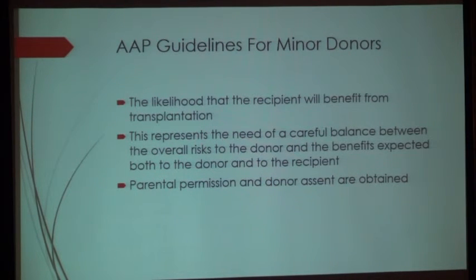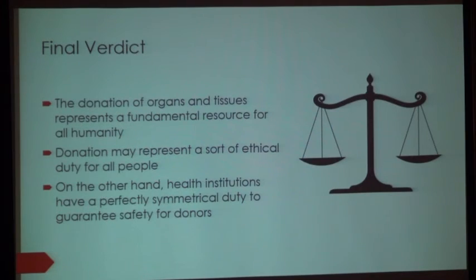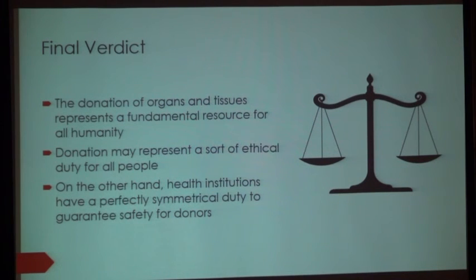The likelihood that the recipient will benefit from transplantation should be present, representing the need for careful balance between the overall risks to the donor and the expected benefits to both donor and recipient. Parental permission and the donor's assent — not consent, because children cannot give consent — should be obtained; children should be agreeing to the process. The donation of organs and tissues represents a fundamental resource for humanity. Donation may represent a sort of ethical duty for all people, while health institutions have a perfectly symmetrical duty to guarantee the safety of donors.